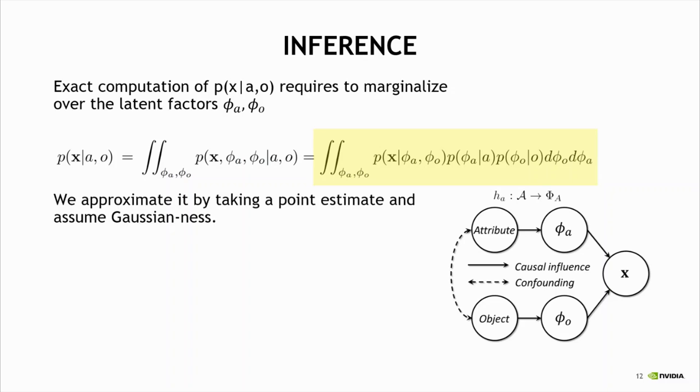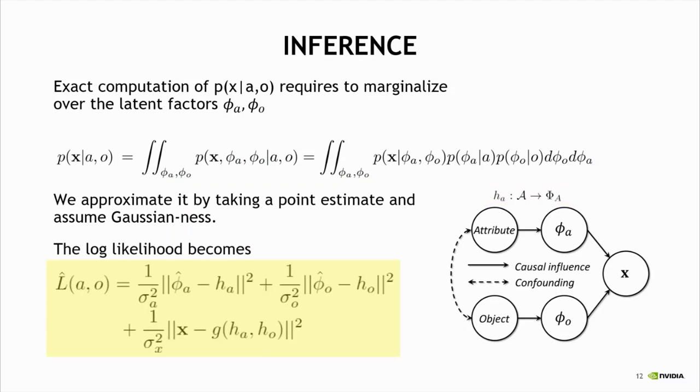We take a point estimate inside this integral and model the attributes as having a deterministic mapping to the mean in this space, with Gaussian stochasticity around it, and we look at the likelihood given that specific mean. Because this is a latent variable, we don't see it and we estimate it back from the image. Under the assumption of Gaussianness, the log likelihood becomes very nicely behaving and results with three embedding-like terms: how good is the representation of the attribute, how good is the representation of the object and of the image. And finally, we select the attribute and object that maximize this likelihood.